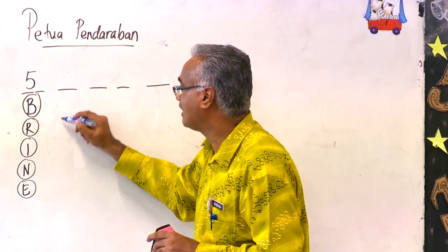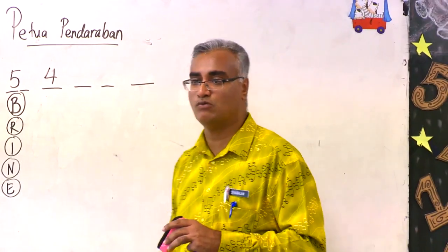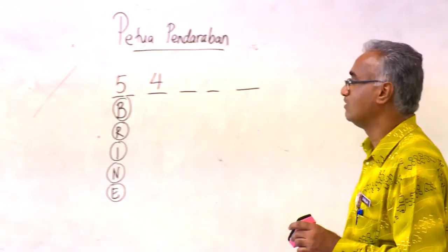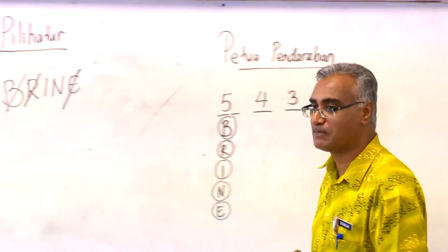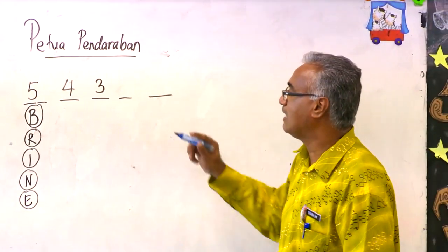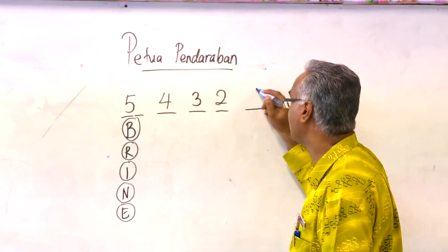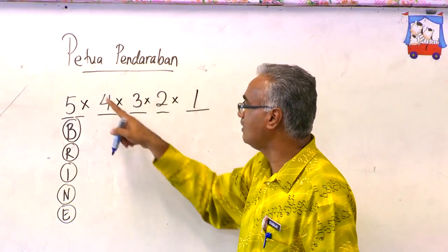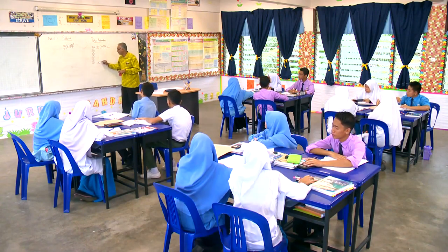Huruf yang tinggal ialah R, I, N, E — 4 pilihan. Apa huruf yang kamu guna sekarang? R. Dah tinggal lagi berapa? 3. Kemudian saya nak guna I. Tinggal lagi? 2. Kemudian potong lagi, tinggal 1. Kemudian kita darab sahaja: 5 darab 4, darab 3, darab 2, darab 1. Jawapannya? 120. Bilangan cara ialah 120.